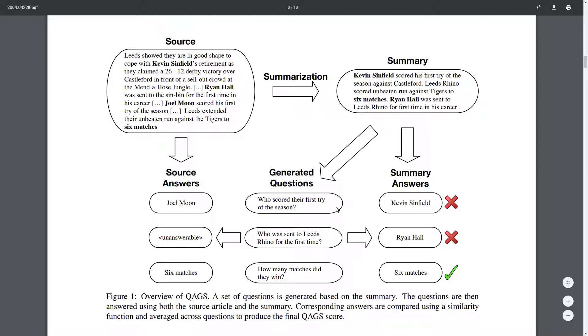They generate answers by using either the source article or the summary, and then basically they compare the answers generated by the question answering system. For example, here for the first question there's a mismatch between the answers produced using the original article and the summary.